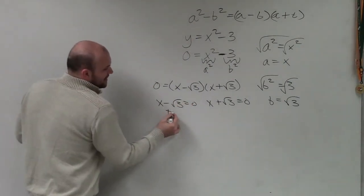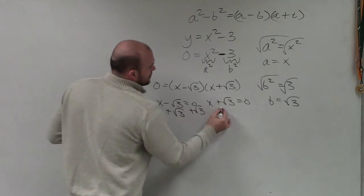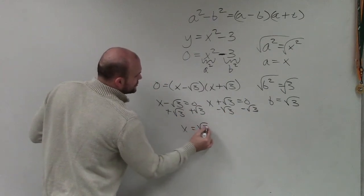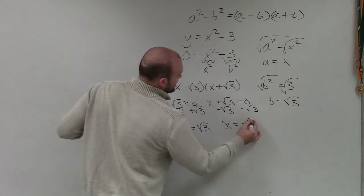So now I go ahead and add on both sides. And therefore, I have x equals the square root of 3 and x equals negative square root of 3.